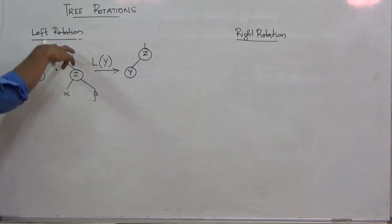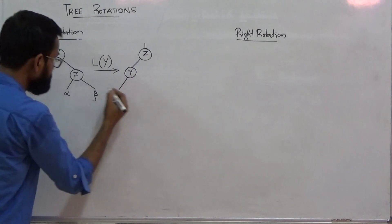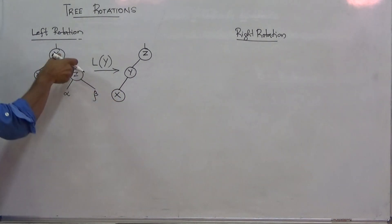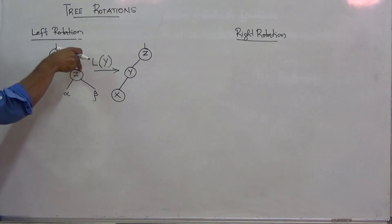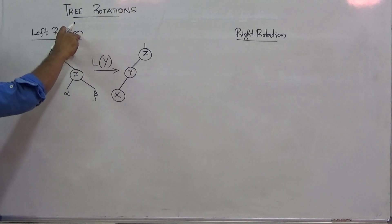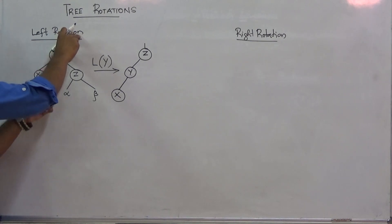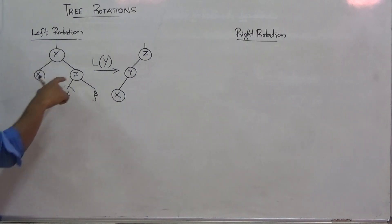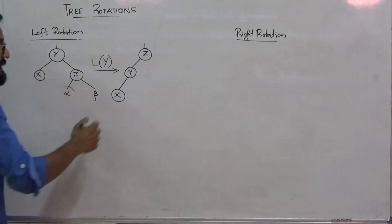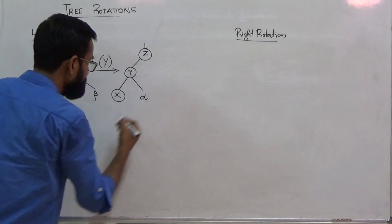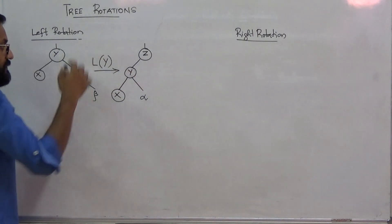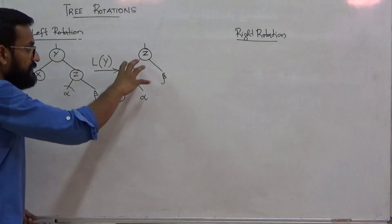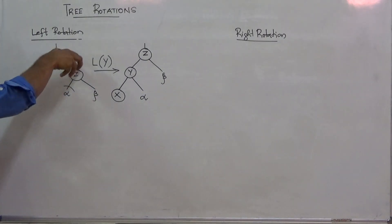y will become the left child of z, and y's left sub-tree remains the same. As far as z is concerned, whenever you perform left rotation with respect to y, z takes the position of root of the sub-tree, y takes the position of left child of z, so the previous left child of z gets detached and gets attached as the right child of y. And z's right sub-tree remains unchanged. This will be the resultant sub-tree obtained after left rotation with respect to y.